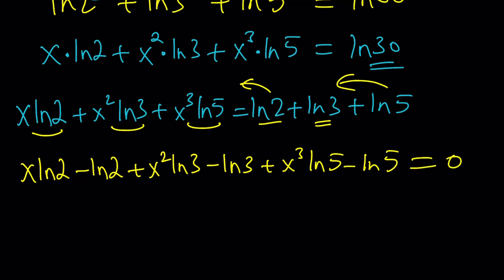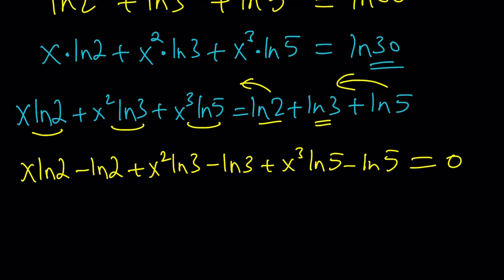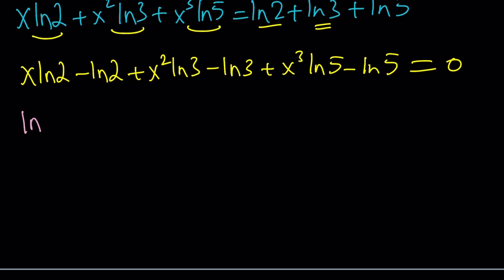This is good because we grouped the terms by common factors, and now we're going to factor. Let's take out an ln 2, we're going to get x minus 1, and then ln 3, we'll get x squared minus 1, and then ln 5, we're going to get x cubed minus 1. And guess what?